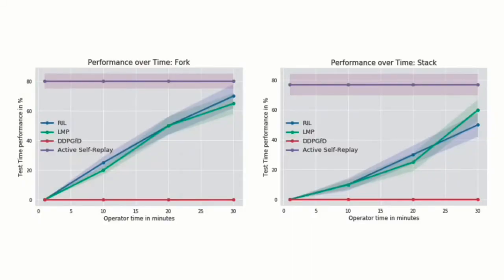We compare self-replay with state-of-the-art imitation learning and reinforcement learning methods. In this plot, we see how the performance of each method evolves as a function of the operator's time spent on training the robot. Our method is an order of magnitude more time-efficient than the baselines.